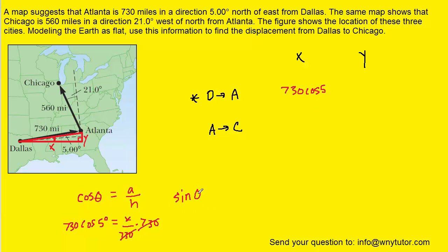Similarly, the sine of an angle equals the opposite over the hypotenuse. So the sine of 5 equals Y — the side opposite the 5-degree angle — divided by the hypotenuse, which is 730. Solving that equation for Y in a similar way, the Y component is 730 times the sine of 5. That completes the journey from Dallas to Atlanta. Let's do a similar exercise for Atlanta to Chicago.